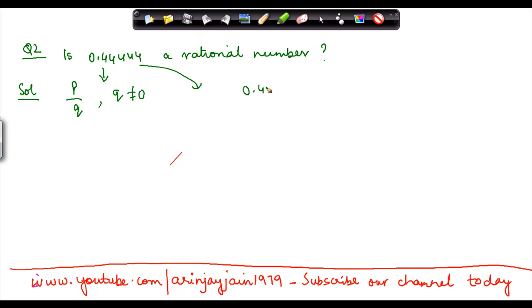Also, 0.44444 can be written as 0.4 with a bar over the 4, where this line basically denotes that this number is a repeating number.